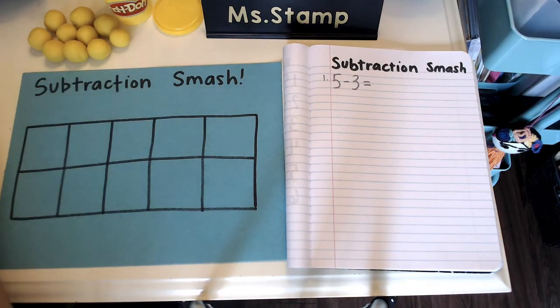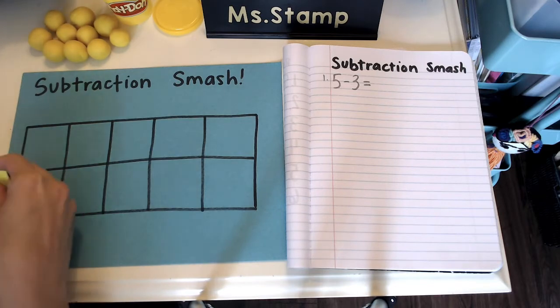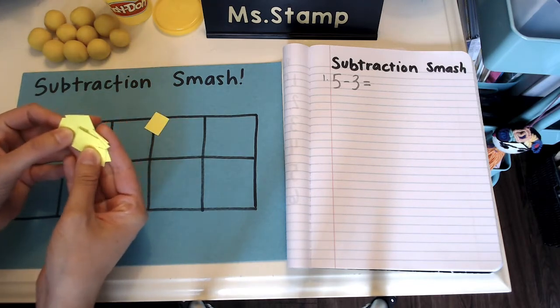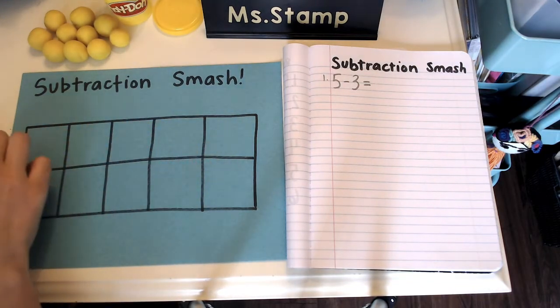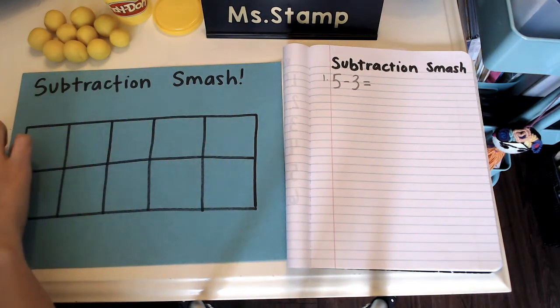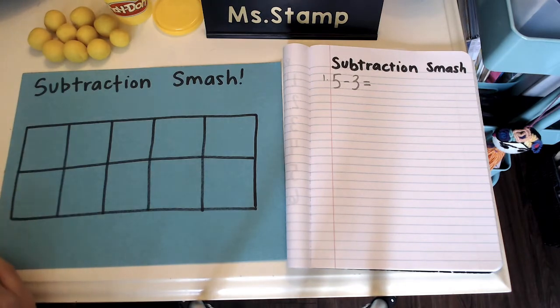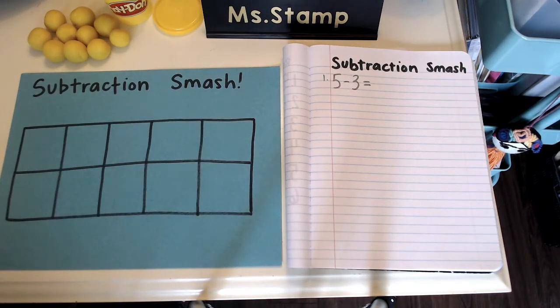If you don't have play-doh at home, you can just use any other manipulatives. You can use pieces of paper like I did for the adding and instead of smashing you'll just take them away. You can use food or different things that you have around the house. So find something that you're going to use, get all of your materials ready and we'll get started.